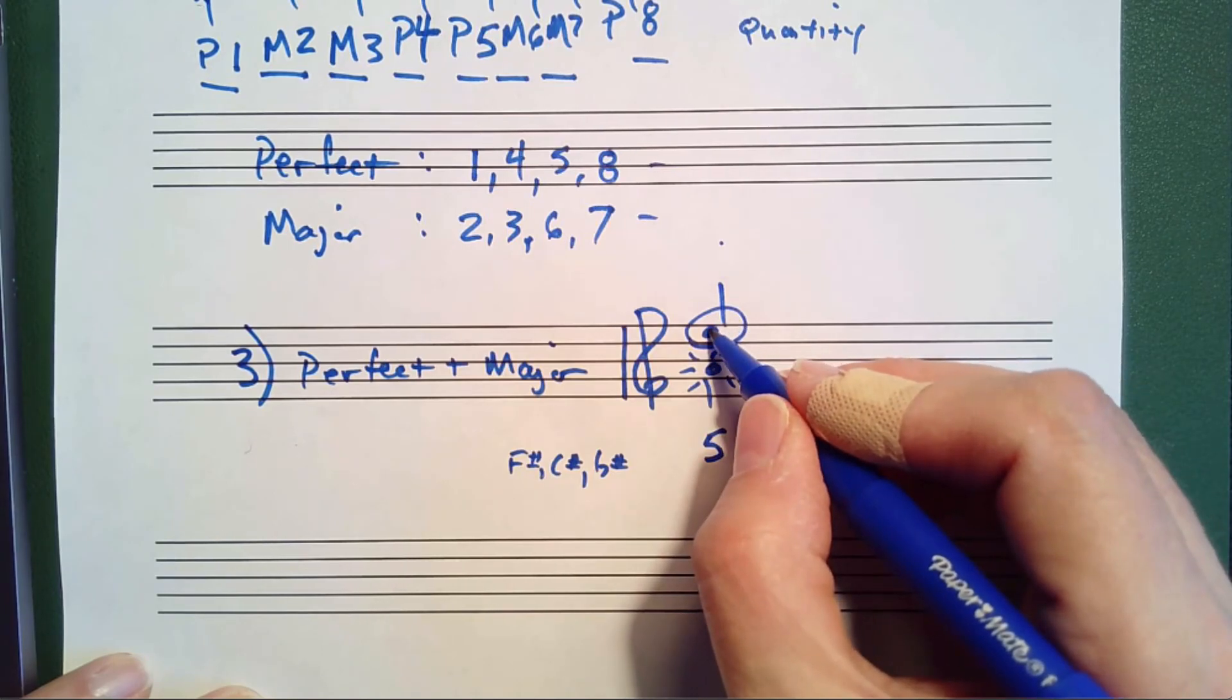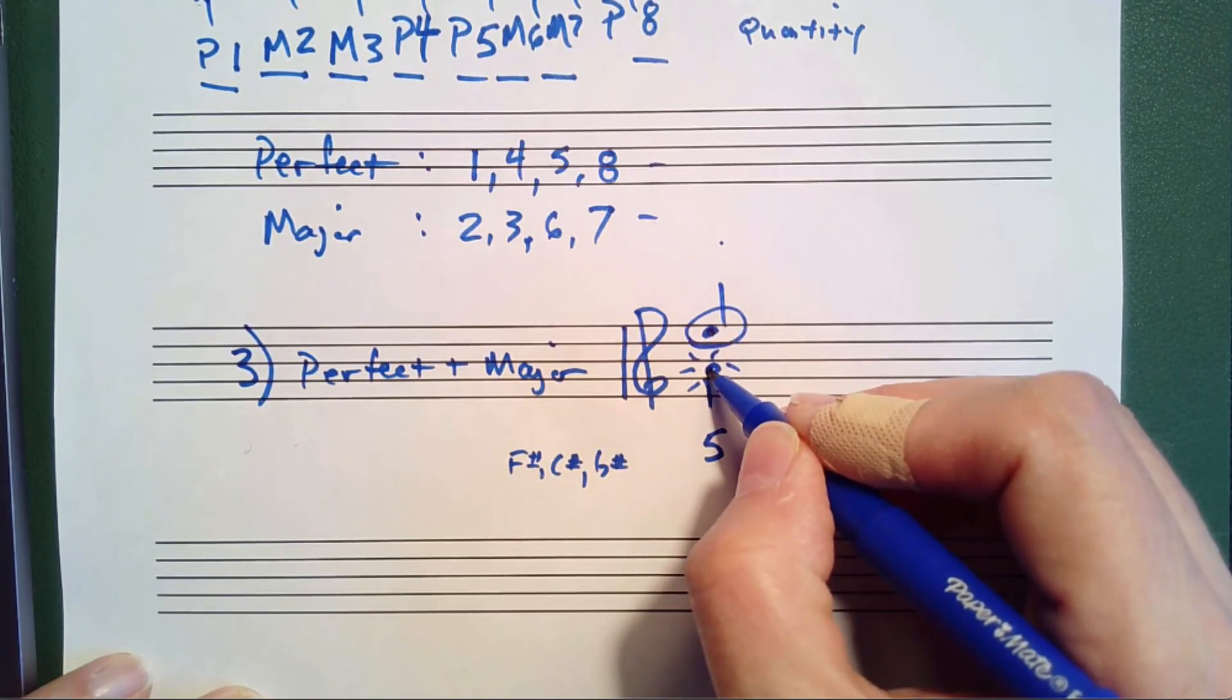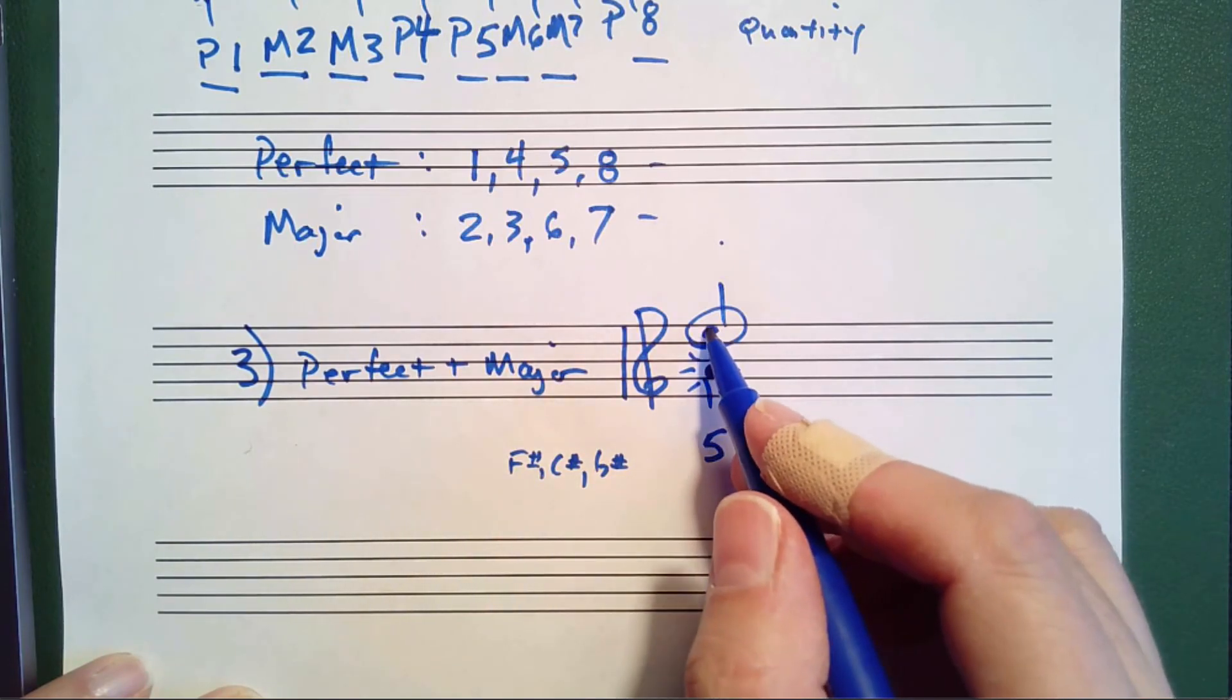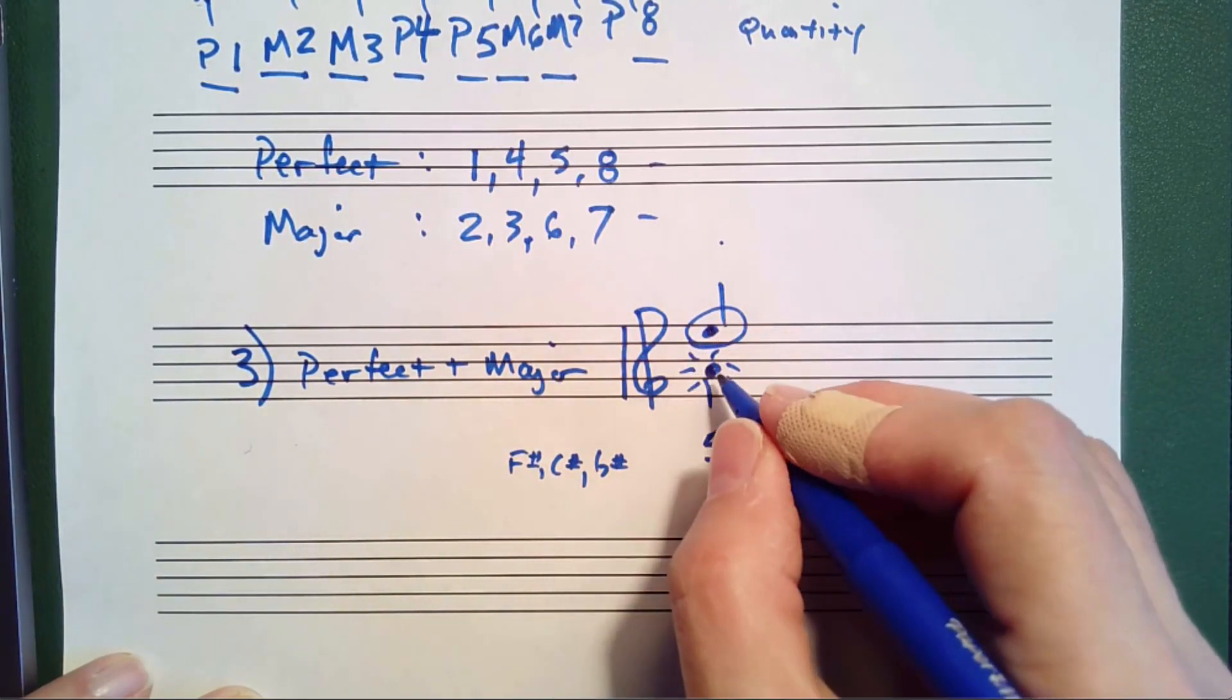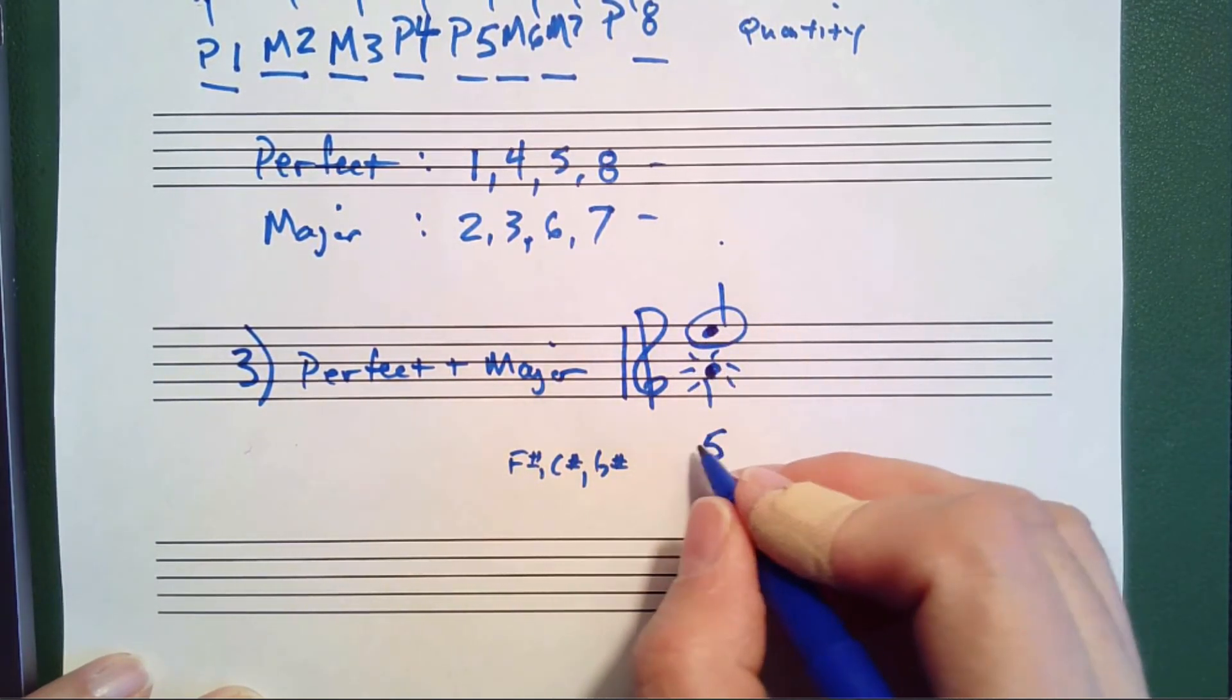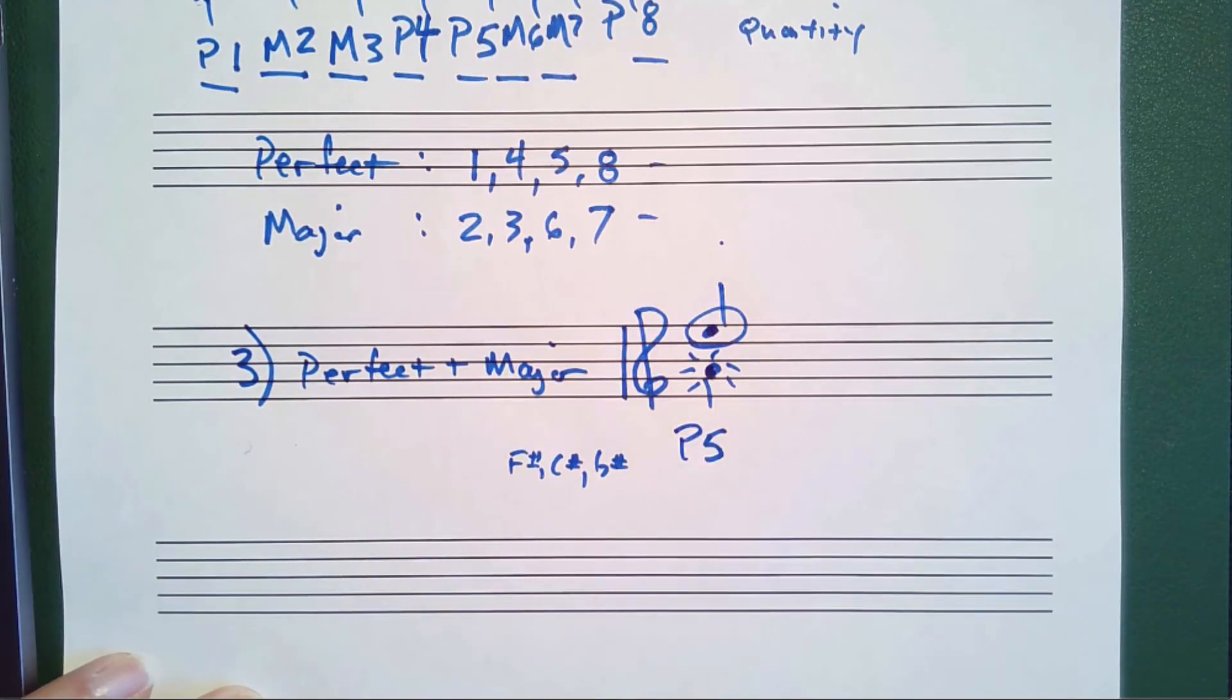That means the fifth note of an A major scale would in fact be E. This note is the fifth note of the A scale. The A scale would go A, B, C sharp, D, E, up to E. Since this is the fifth note of this scale, this is a perfect fifth.